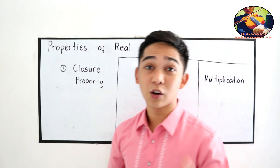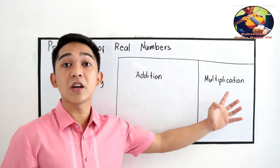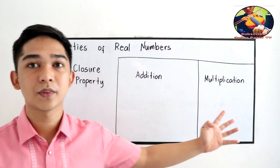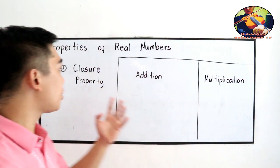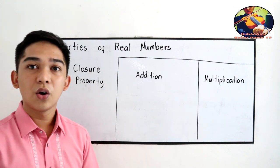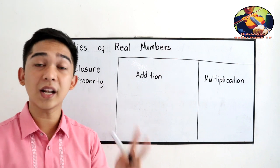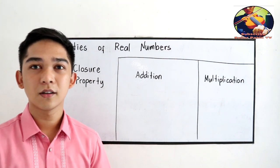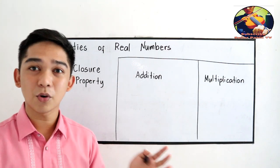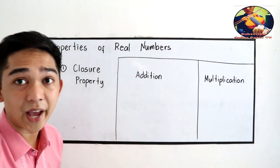We have the closure property of addition and the closure property of multiplication. The closure property states that if you're going to add or multiply two real numbers, then the sum or product will be a real number also. Let us try.